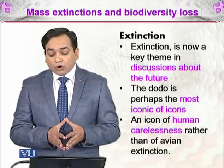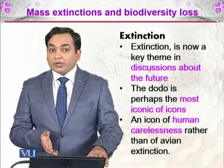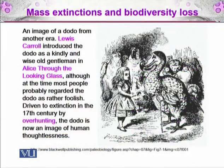The dodo is an icon of human carelessness rather than of avian extinction. Even though it was a bird that went extinct, it is shown as the icon of human carelessness. Here you can see an image of the dodo from another era. Lewis Carroll, the author of Alice Through the Looking Glass, featured the dodo, meaning it is embedded in our culture — originally portrayed as a very kindly and wise old gentleman, but today the dodo is an image of human thoughtlessness.